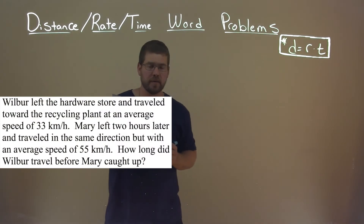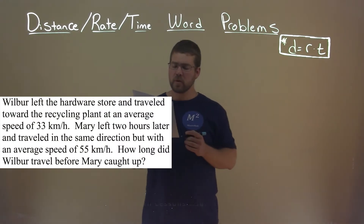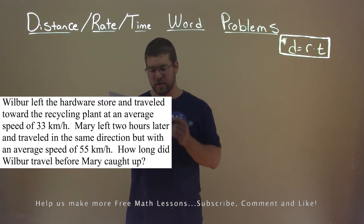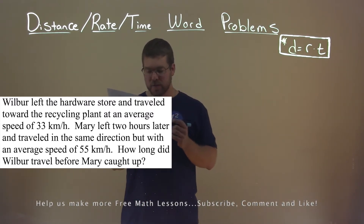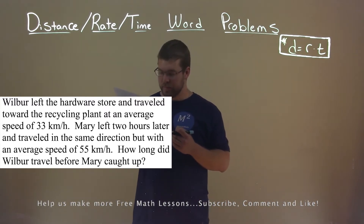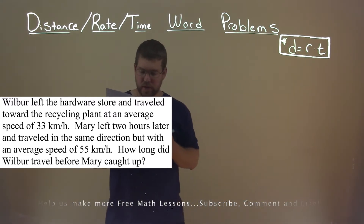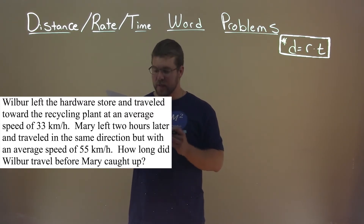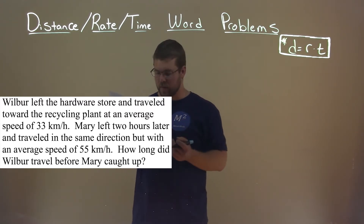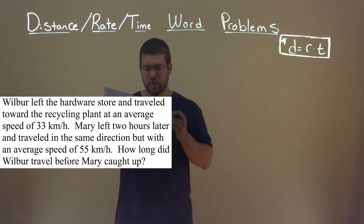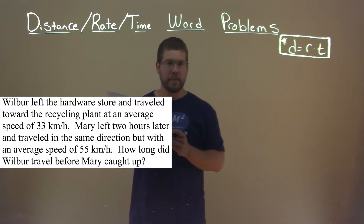We're given this problem right here. Wilbur left the hardware store and traveled toward the recycling plant at an average speed of 33 kilometers per hour. Mary left two hours later and traveled in the same direction, but with an average speed of 55 kilometers per hour. How long did Wilbur travel before Mary caught up?